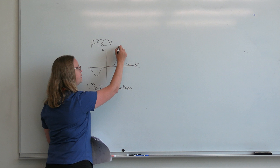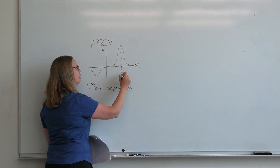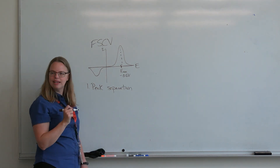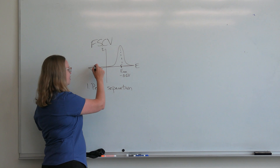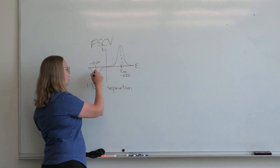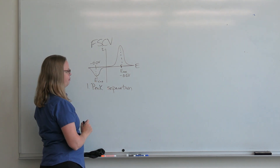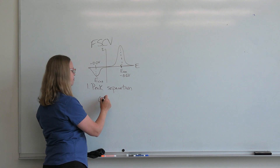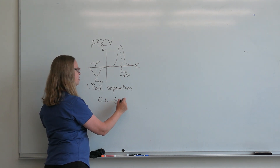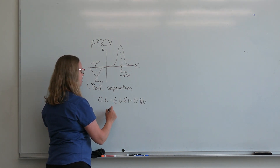The first feature we're going to talk about is peak separation. If we look at the anodic potential, we usually say it's around 0.6V — that can vary by the electrode a little bit. The cathodic potential is about minus 0.2V. So we've got 0.6 minus minus 0.2, which is about 0.8 volts, or 800 millivolts.